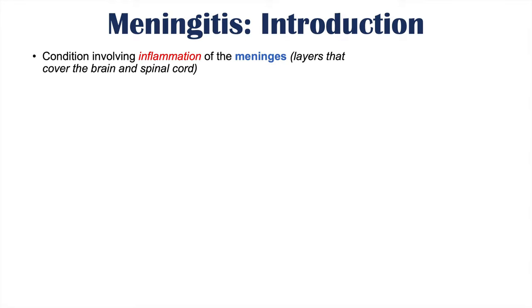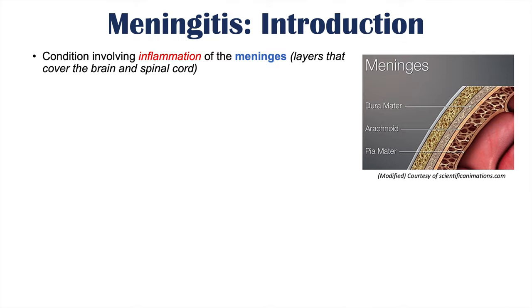Meningitis is a condition involving inflammation of the meninges. The meninges are layers that cover the brain and spinal cord. Here is a diagram showing those layers.